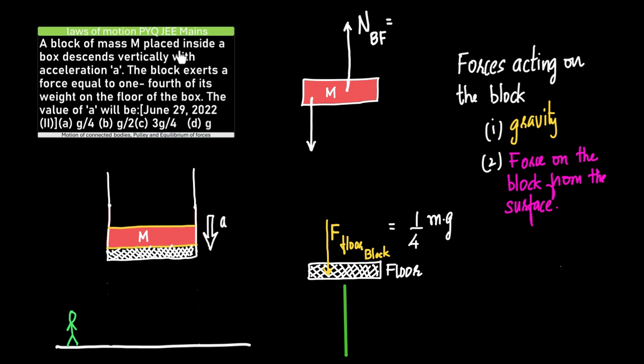A block of mass M placed inside a box descends vertically with acceleration A. The block exerts a force equal to one-fourth of its weight on the floor of the box. The value of A will be?